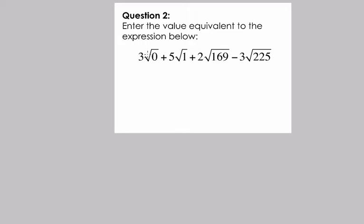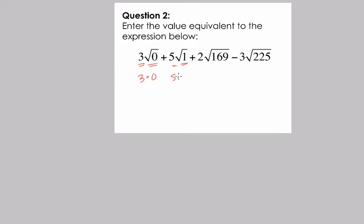In question 2, we're asked to deal with an expression with a sequence of square roots and numbers, and we can quickly break these down. The square root of 0 is 0 — what number times itself is 0? Well, 0. And 3 next to the square root sign means 3 times the square root of 0, so this just means 3 times 0. The square root of 1 is 1 because 1 times 1 is 1. And we have 5 times the square root of 1, so it's 5 times 1, and we're adding these together.